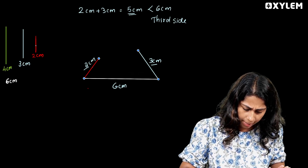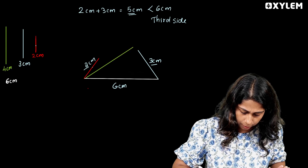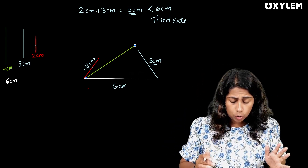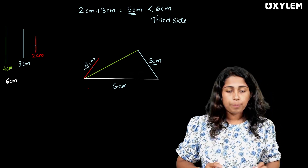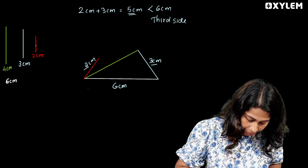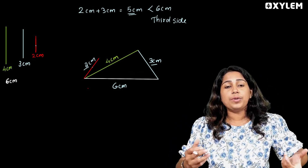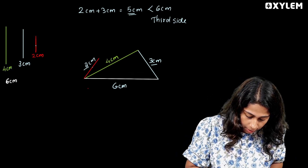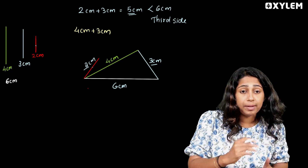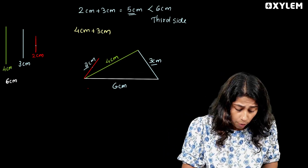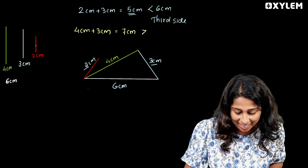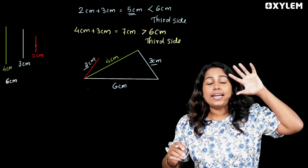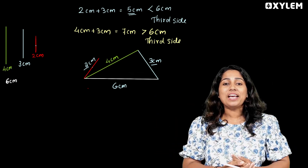I am going to use a 4 cm line. I am going to adjust the triangle. This is 4 cm. The sides are 4 cm, 3 cm, and 6 cm. I am going to check: 4 cm plus 3 cm equals 7, which is greater than 6 cm — greater than the third side. So the sides satisfy the condition and we can make this triangle.